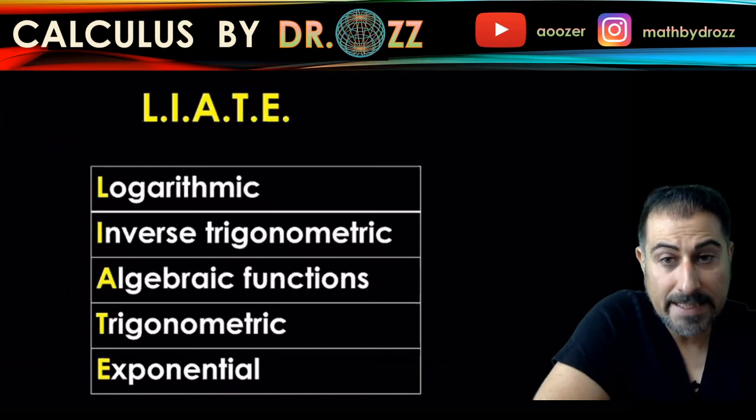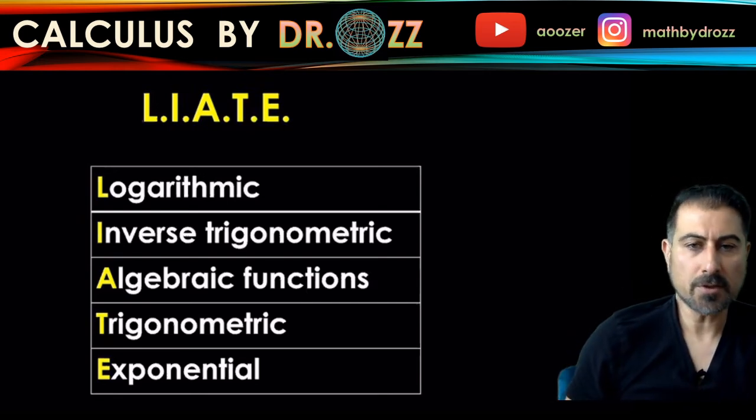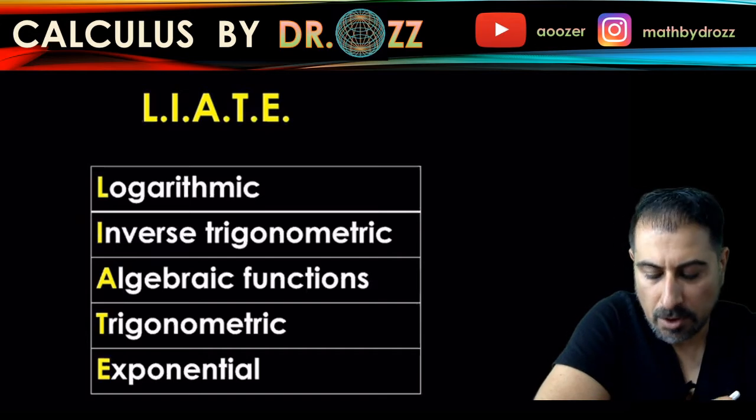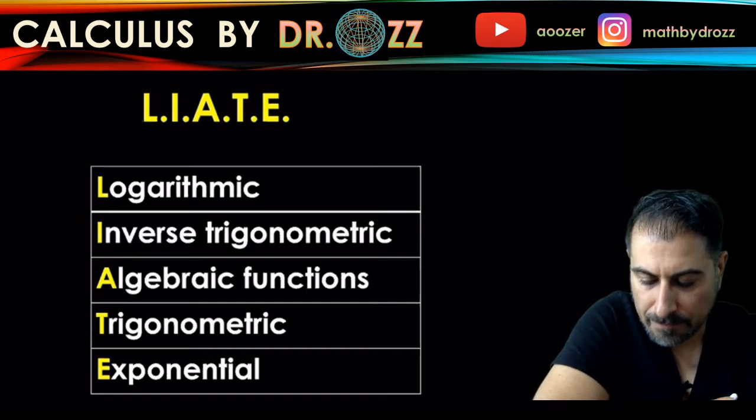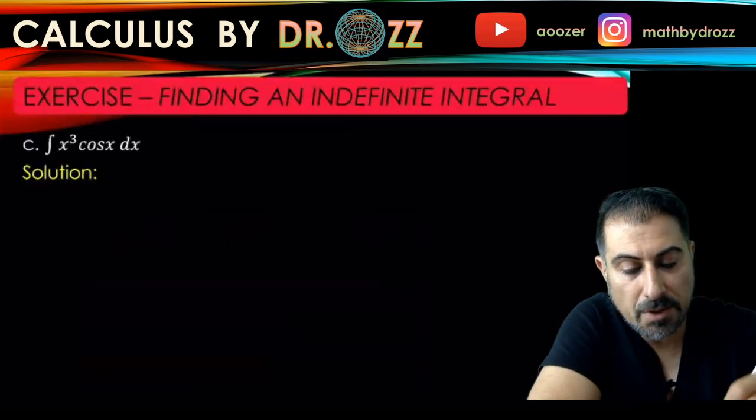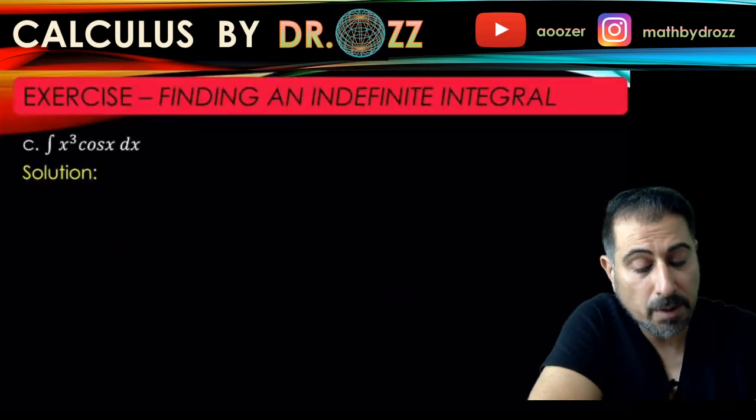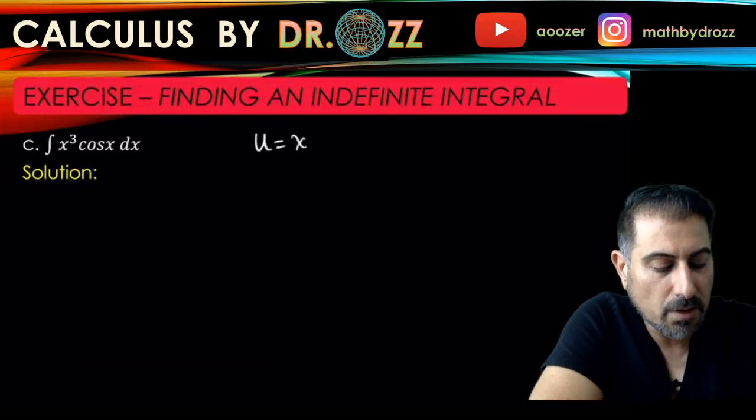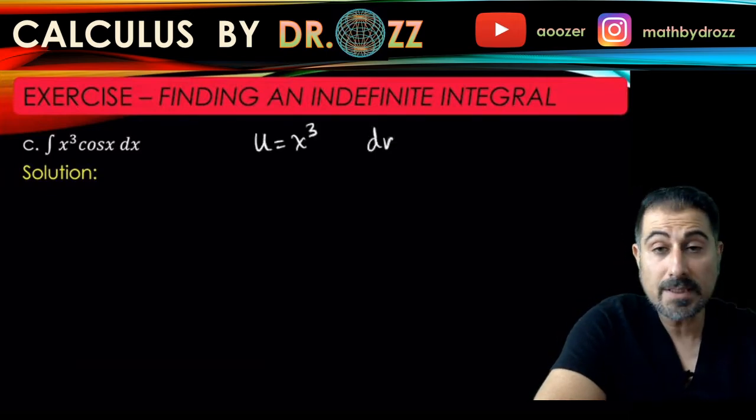I have LIATE, right? So I have x cubed cosine x. x cube is an algebraic function, it's a polynomial, and cosine x is trig. So I'm going to start calling x cubed to be u. I'm going to apply integration by parts. So u equals x cubed and dv equals cosine x dx.